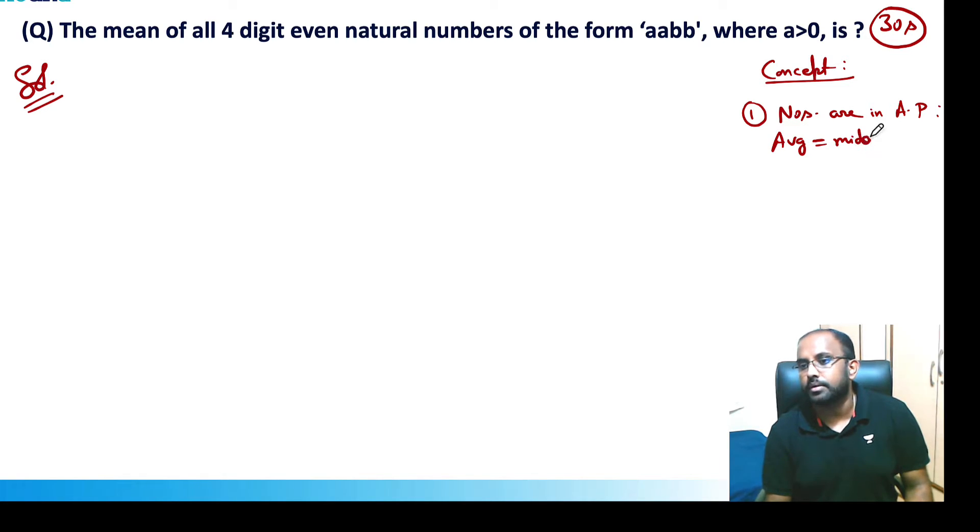The average is the middle term. For example, if we have 2, 4, 6, 8, and 10, what is the average here? It's 6. You can work it out: 2 + 4 + 6 + 8 + 10 divided by 5, which comes out to be 6.